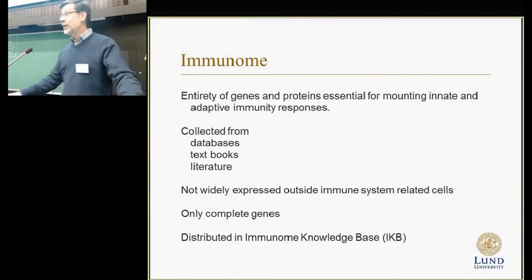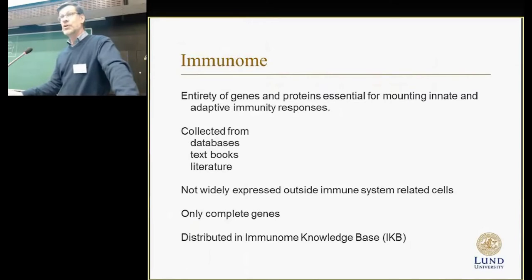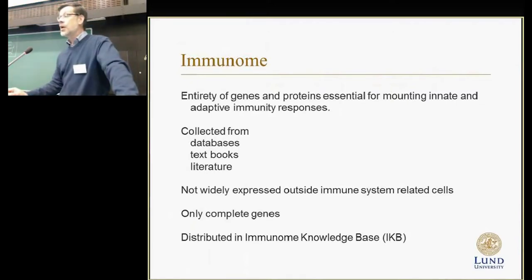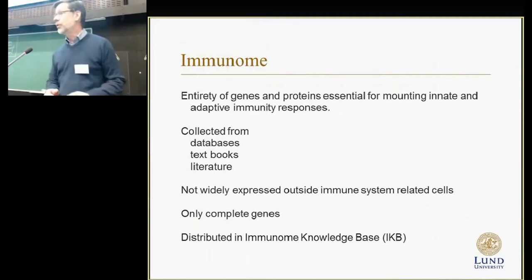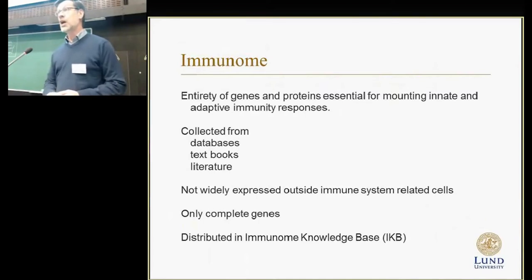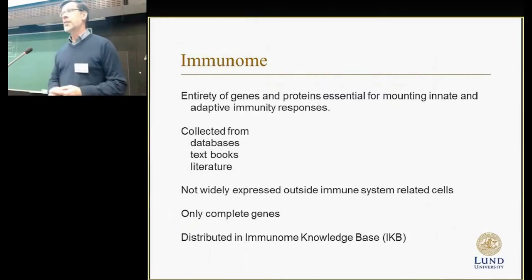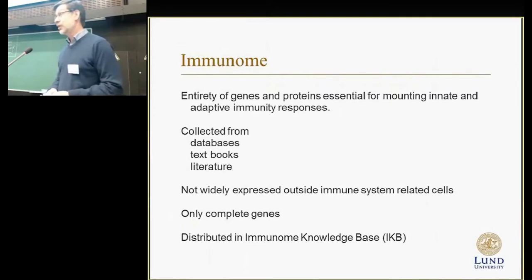To do that, we collected information from databases, textbooks, and literature to first find out those genes and proteins which are truly essential for the immune system. There are lots of processes and proteins which are important for the immune system — take DNA replication or energy metabolism. These are things which are important for all cells, but they are not specific for the immune system.